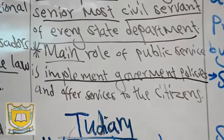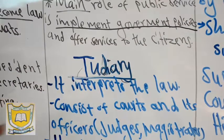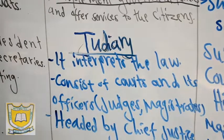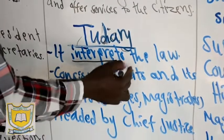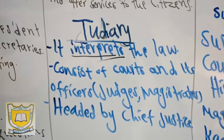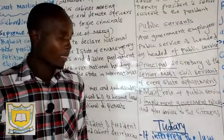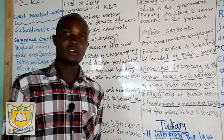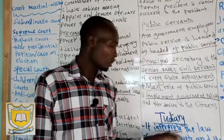Now the last arm of the government is called the judiciary. Judiciary is headed by the chief justice who is the president of the judiciary. The main role of the judiciary is to interpret the law. To interpret the law, we are talking about the court system. The parliament makes the law, the executive implements the law and makes sure you follow it. Now if you don't follow, punishment is under the judiciary — that's what you call interpretation.